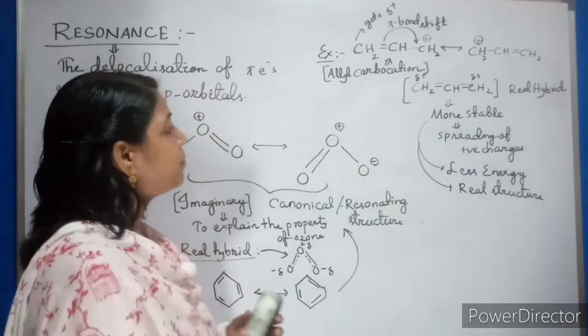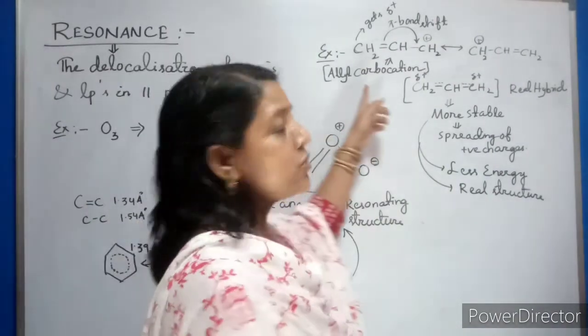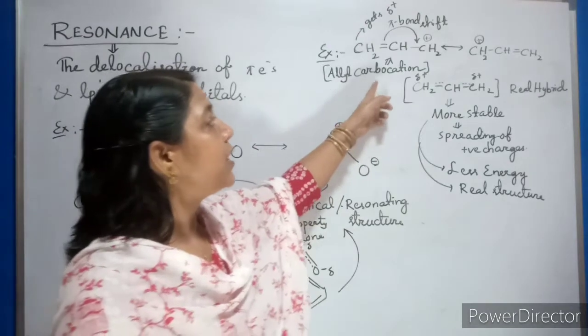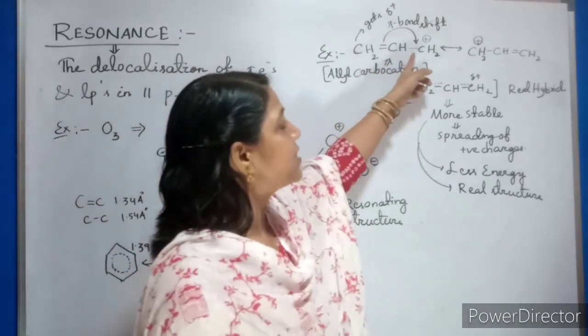Now you can see one more example also. For example, you take your allyl carbocation. Now if you see your allyl carbocation, it is CH2 double bond CH, single bond CH2.